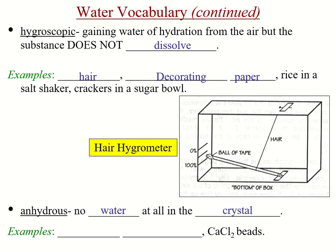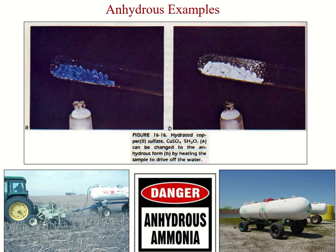Anhydrous means no water at all in the crystal. Examples include anhydrous ammonia and calcium chloride beads. Here you can see copper sulfate before and after heating it to drive off the water — with water it has a pretty blue color, and after it has a white chalky appearance. We also use anhydrous ammonia to fertilize fields.